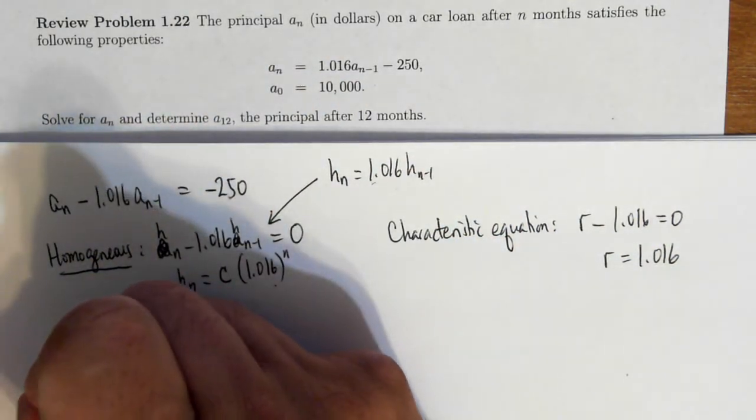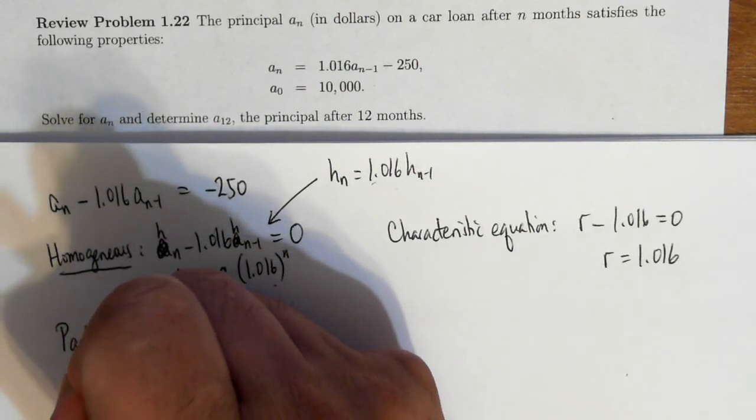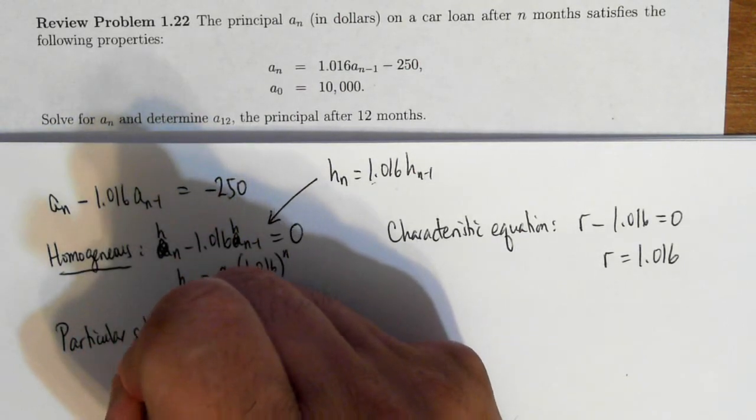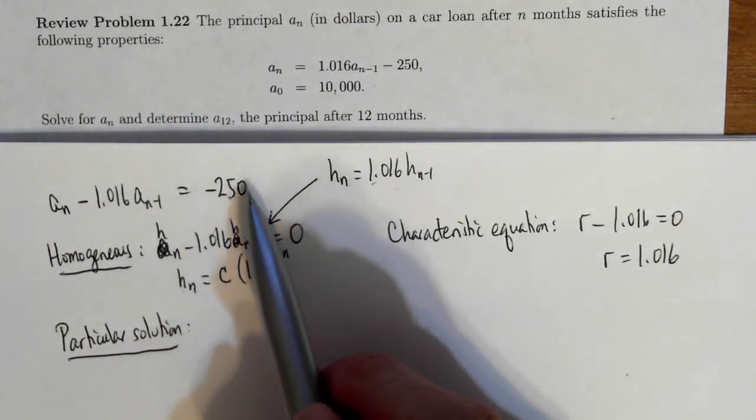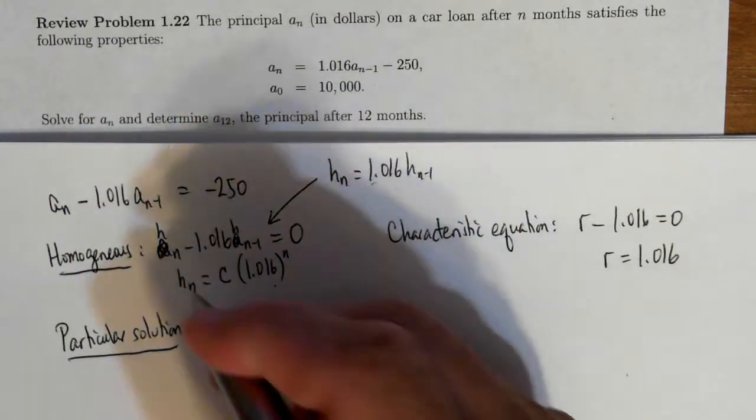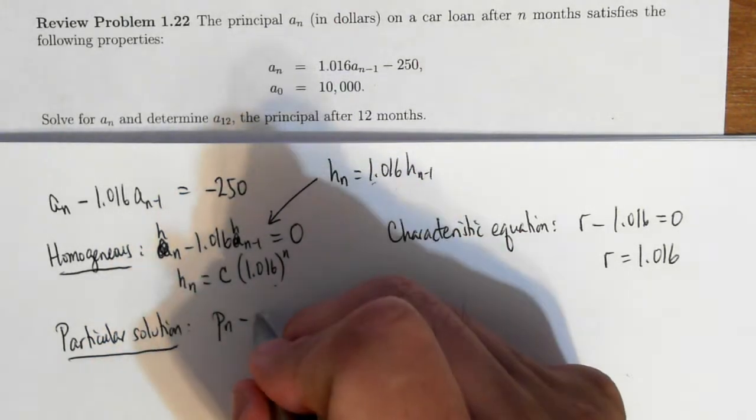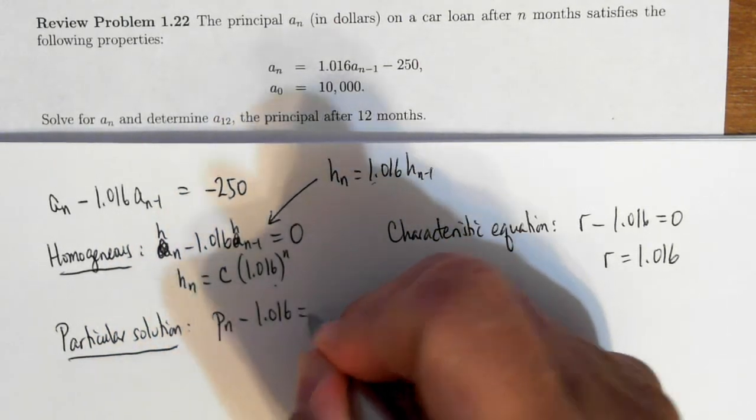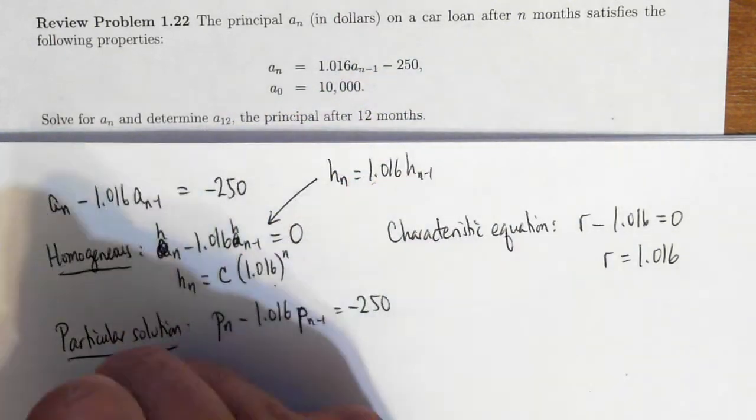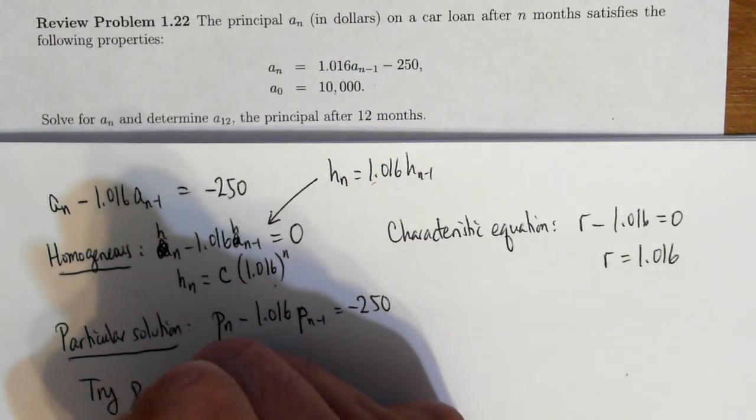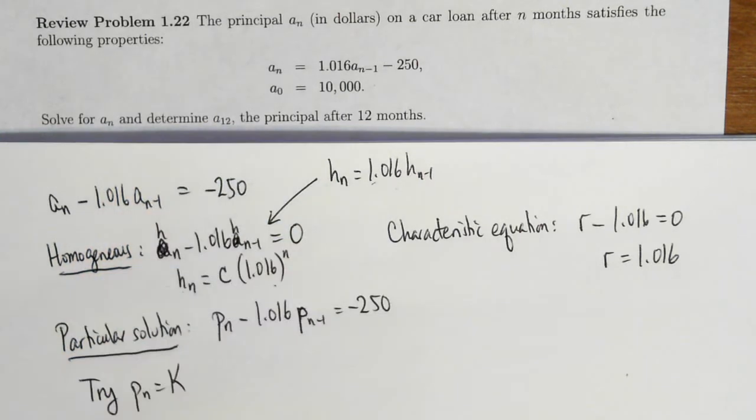Now to solve this non-homogeneous solution, I have to find a particular solution. Now the right-hand side is a constant. So I'm going to find the particular solution. And the right-hand side is simply a constant. So let's try to solve this by using a constant.